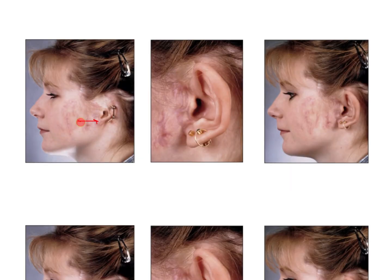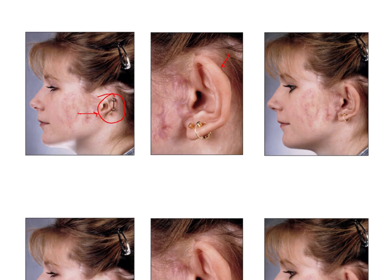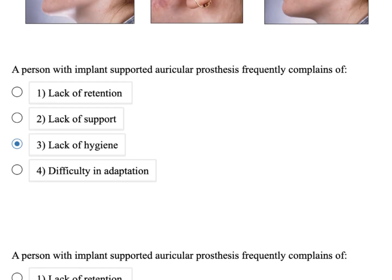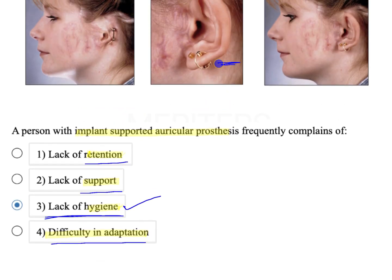This is an auricular prosthesis. There is a bar, meaning implants were placed and this bar supports the auricular prosthesis with clips - a bar-retained auricular prosthesis. There was a question on this: a person with implant-supported auricular prosthesis will frequently complain of lack of retention, support, hygiene, or difficulty in adaptation. The correct answer is lack of hygiene, because retention is provided by the implant and clips, support is from tissues, and patients can easily adapt since no additional adhesive is used. However, hygiene becomes a problem because the areas are very difficult to clean - there is accumulation of sweat, debris, and bacteria, leading to frequent inflammation.